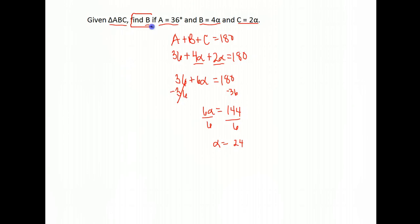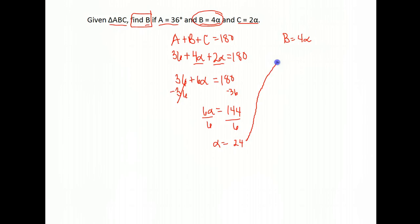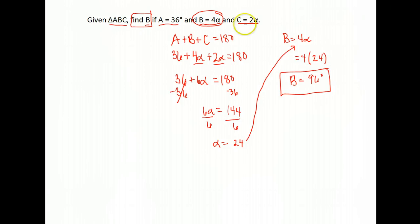No — I was asked to find B. B was 4 times alpha, so we didn't waste our time finding alpha first. We substitute: alpha is 24, so B is 4 times 24, which is 96. Angle B is 96 degrees. If they asked for angle C, we'd do the same thing — put alpha in as 24 to find C.